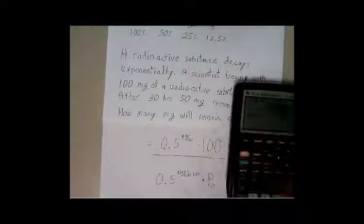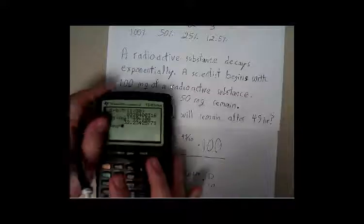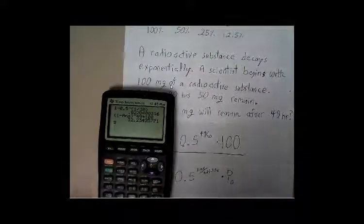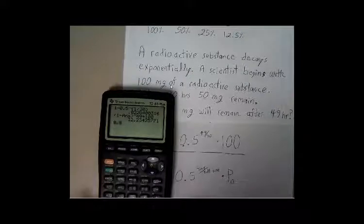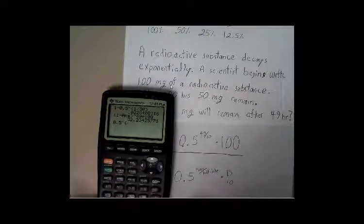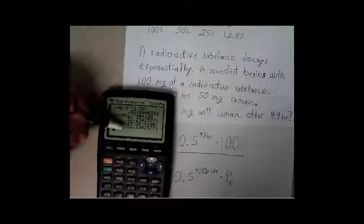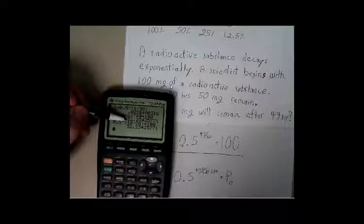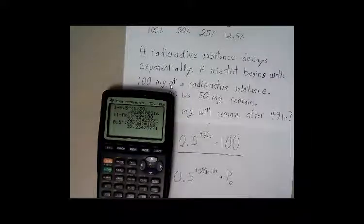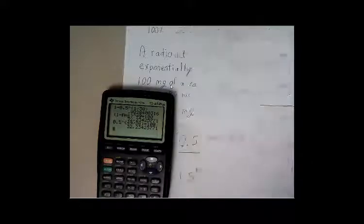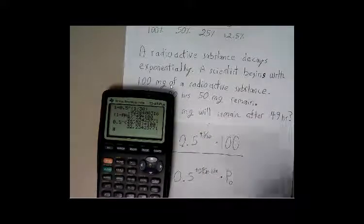Taking the calculator, I can plug and chug 0.5 raised to the 49 over 30, times 100, and you can see I'm getting the same answer as when I did all of the algebra. So this is definitely a streamlined process.